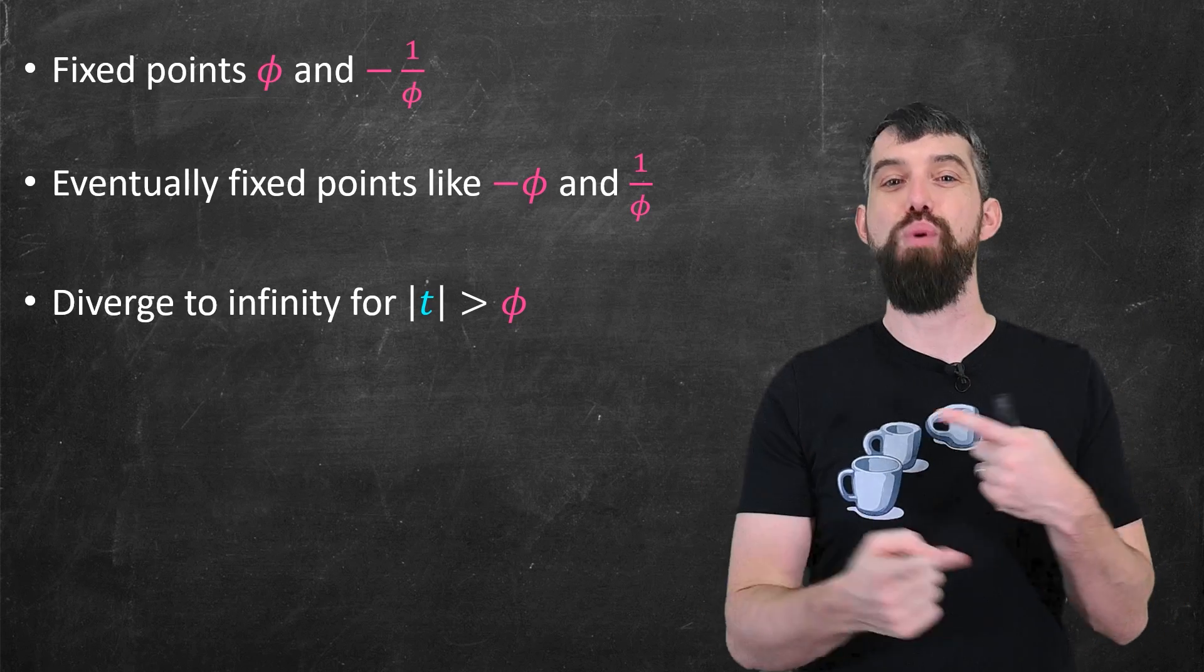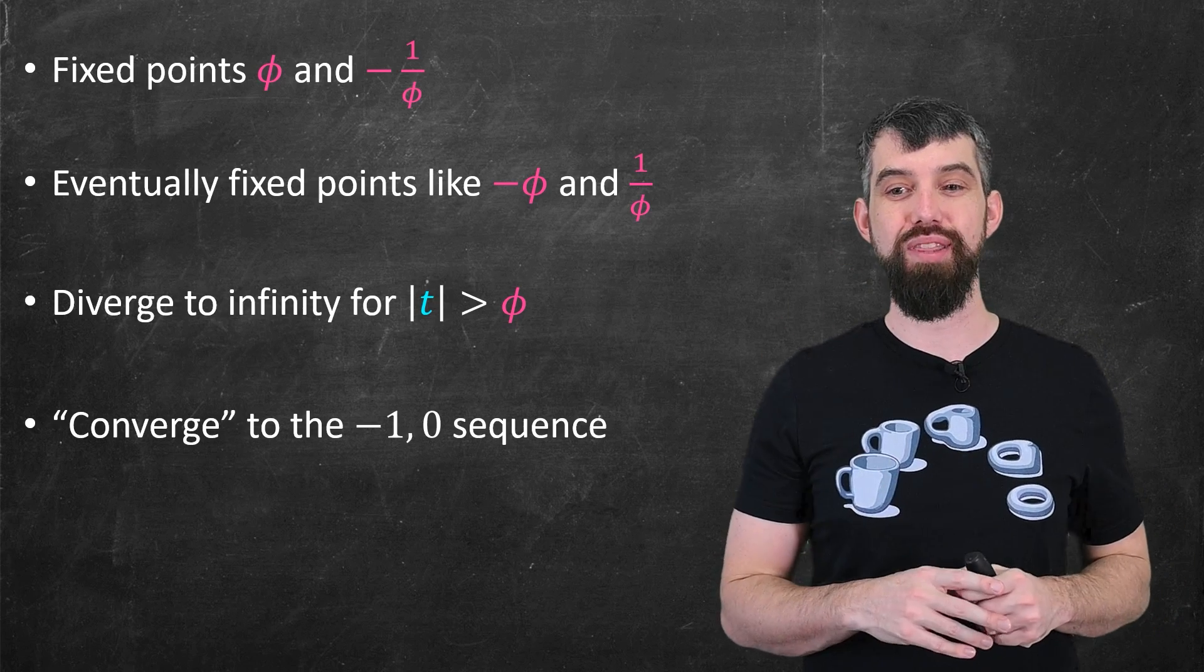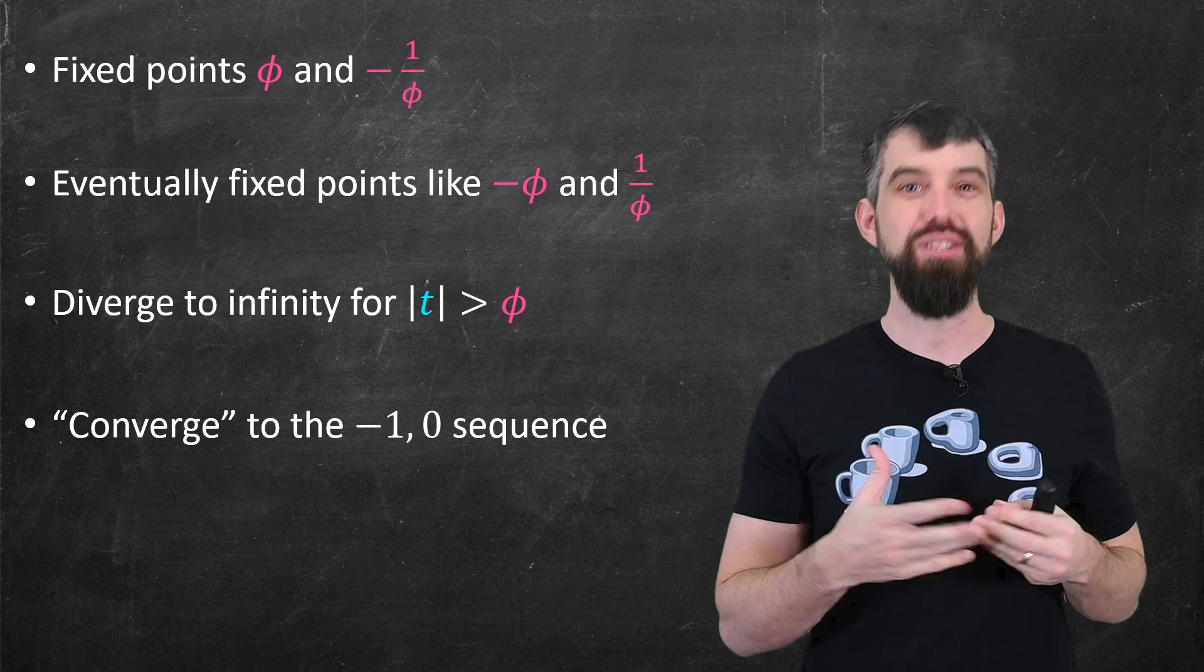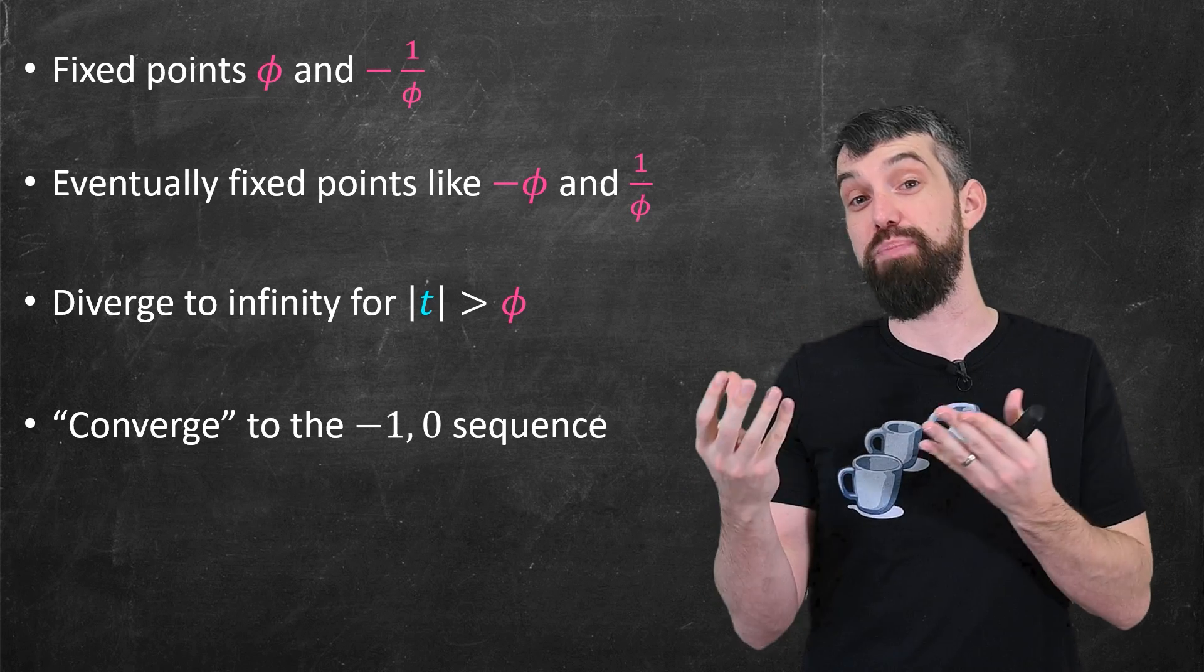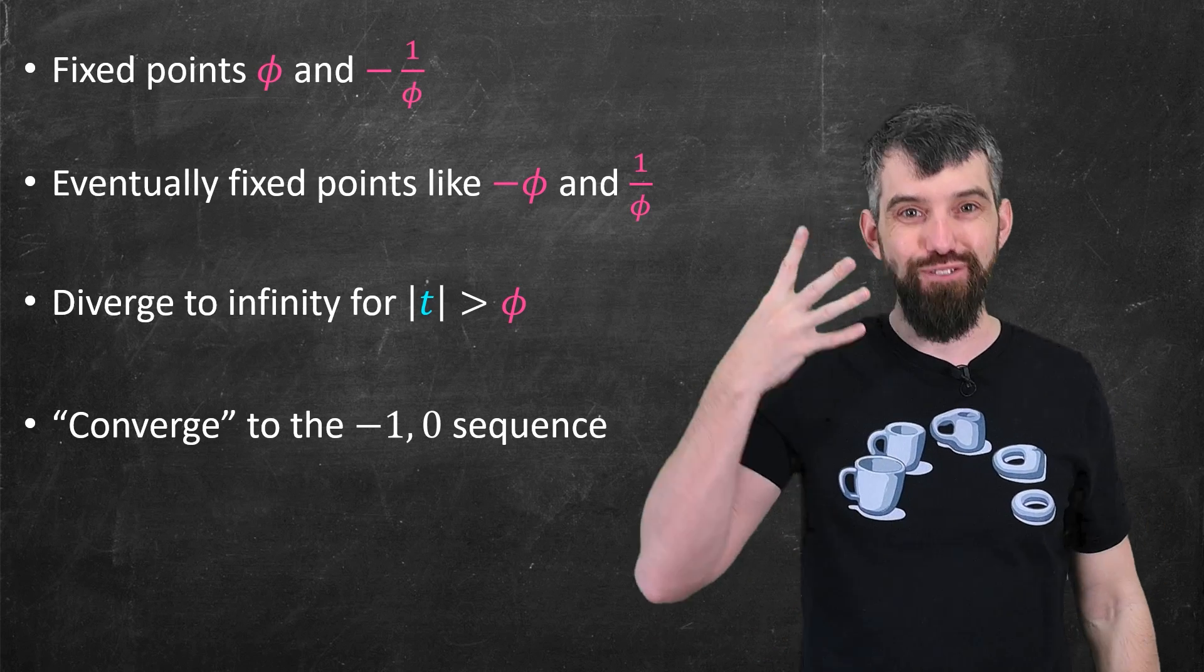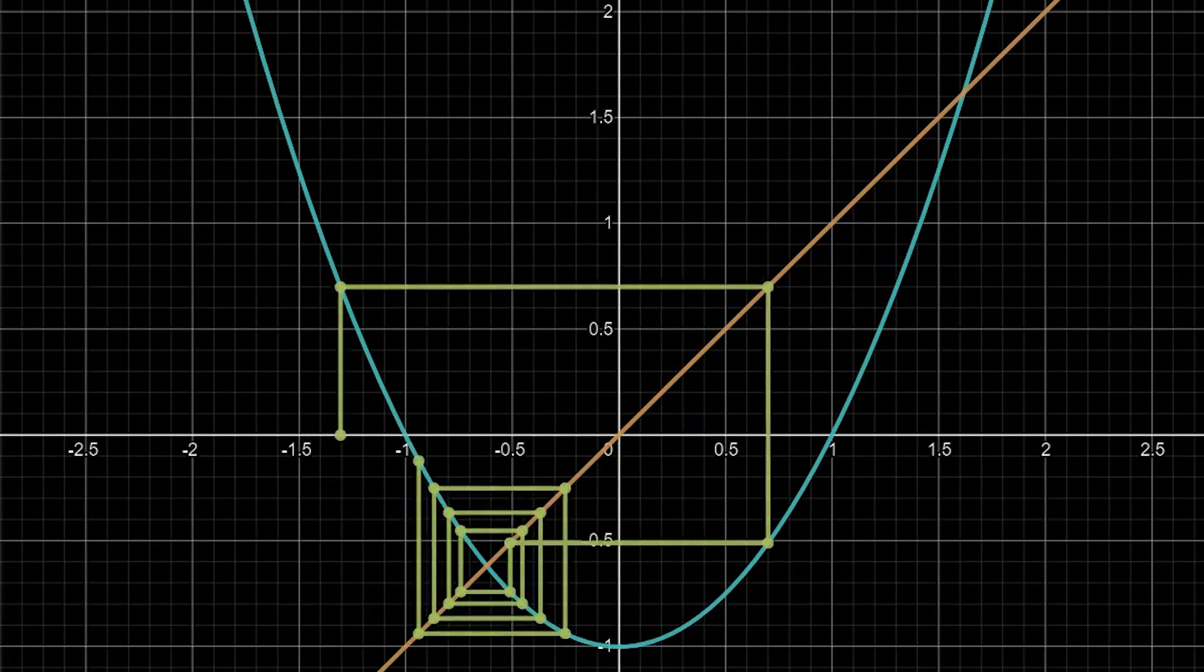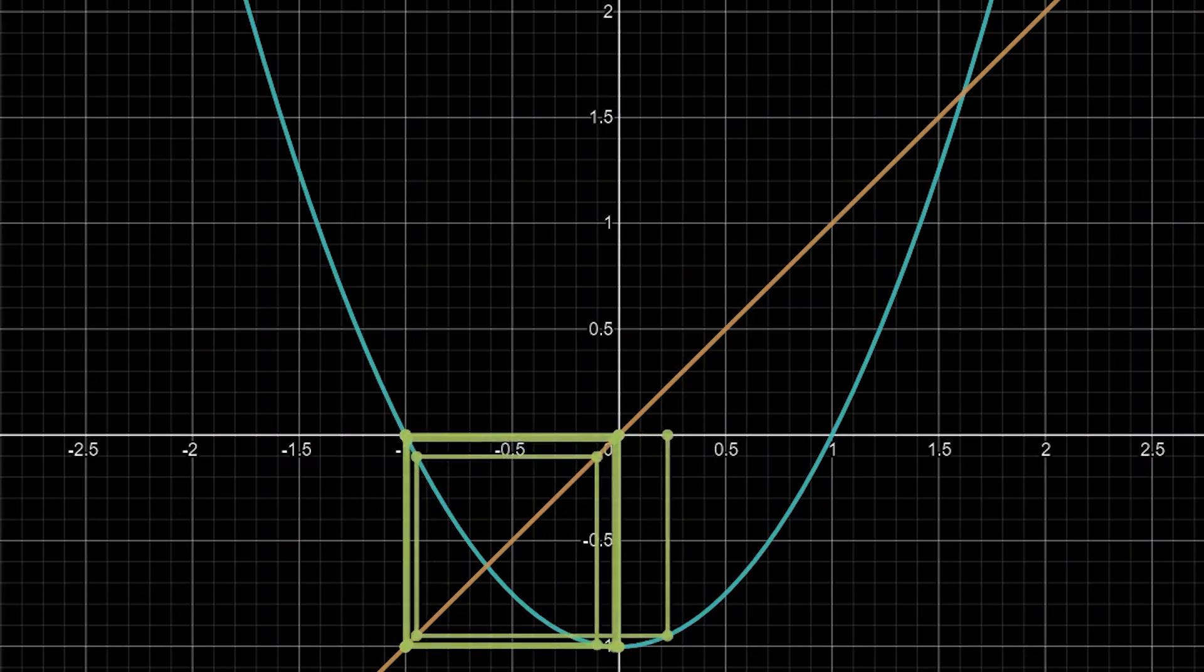Then you have all the points that diverge, these are when your starting spot has a magnitude larger than the golden ratio. And then there's all the other points. And for all of those other points, they all collapse back down to that minus 1, 0, minus 1, 0 alternating sequence. So they don't actually converge, this is a divergent sequence, but it gets arbitrarily close to this particular sequence. So we have these four different categories of points, and that's what led to this kind of crazy and beautiful picture, the solution to this nested integral problem.